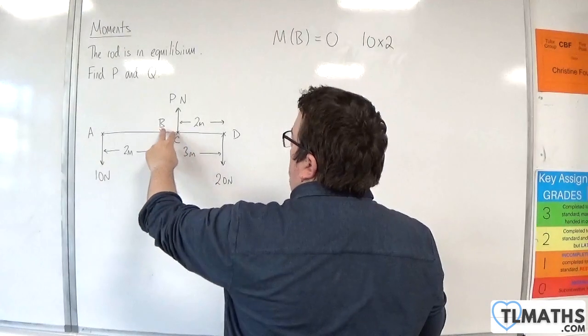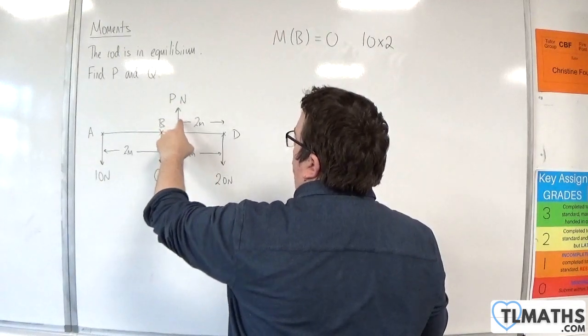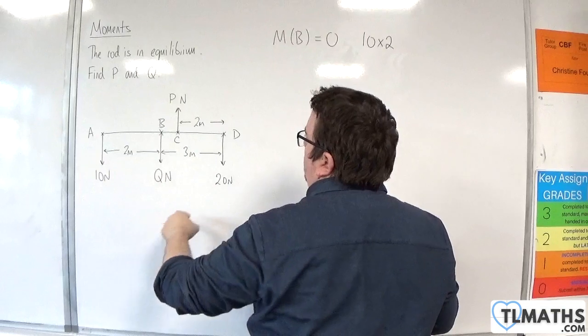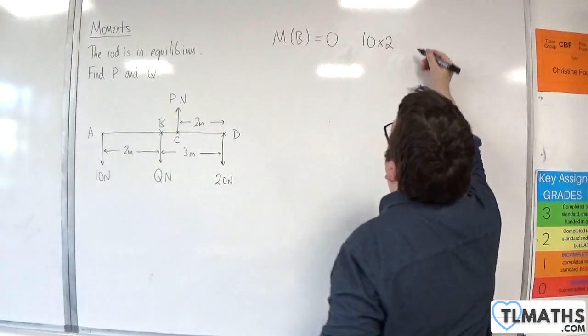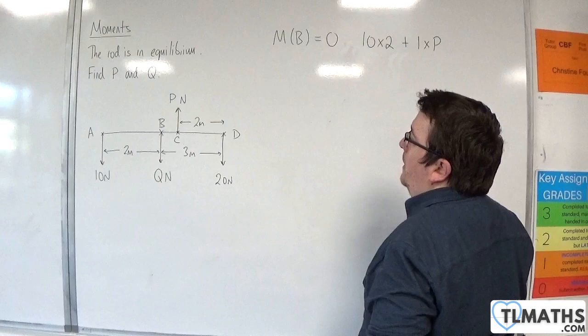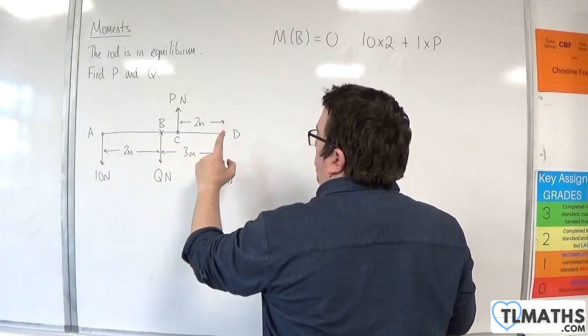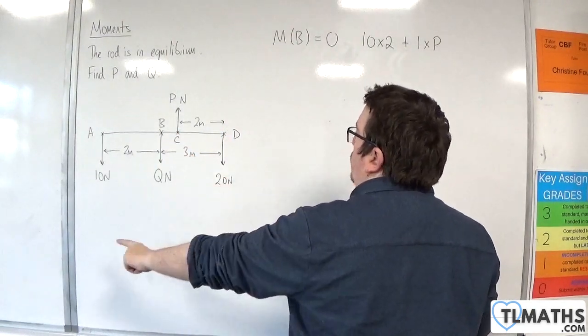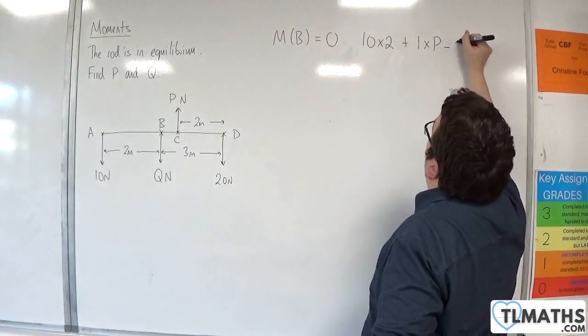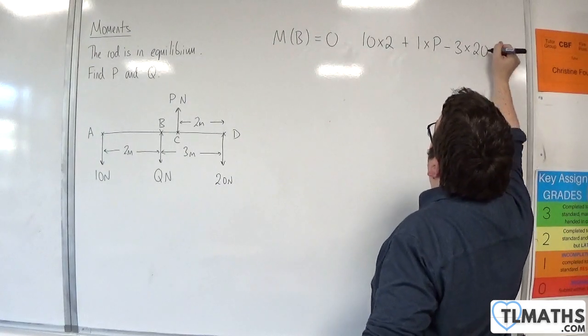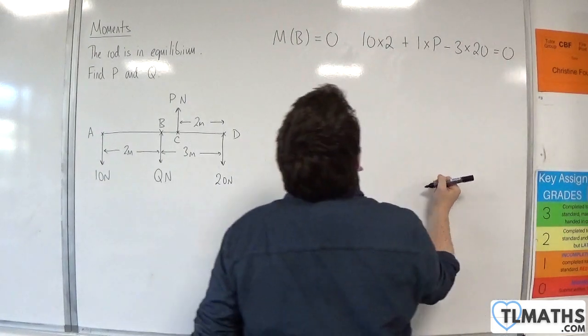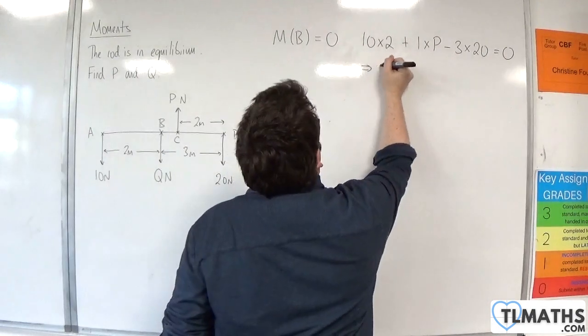We're going to be 1 metre away from the P newton force and that's going in an anti-clockwise motion as well, so that's positive, so plus 1 lot of P. And then we are 3 metres away from the 20 newton force, so that's going clockwise, so that's negative. So take away 3 times 20 and that's got to be equal to 0.